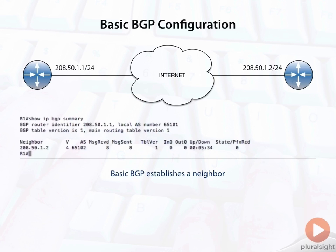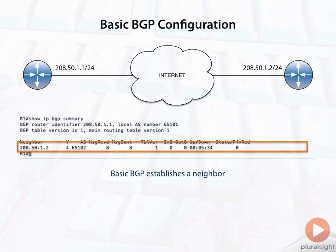I'm going to do the 'show IP BGP summary' command. In the output, I have a neighbor 208.50.1.2. We're looking at this from the perspective of the router on the left-hand side. It sees the version — version 4. It sees the Autonomous System is 65102. Over on the far right-hand side, you can see state/prefix received. Zero is the number of prefixes received, so no prefixes have been sent. But more importantly, notice that the state is blank here — that's actually a good thing. That is the summary information for an established BGP neighbor.